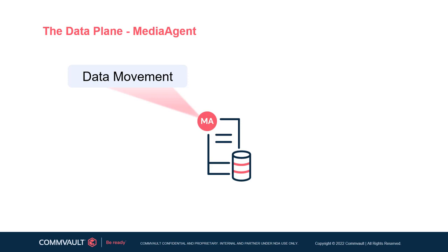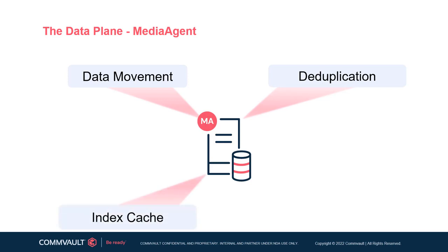Media agents are also used during auxiliary copy jobs where data is copied from one storage target to another. The media agent also hosts the deduplication database and maintains granular indexing information in its index cache, which includes detail on the jobs and objects that it has processed. Another function the media agent handles is interfacing with supported primary storage arrays for IntelliSnap snapshot management, which will be covered in more detail in later modules.